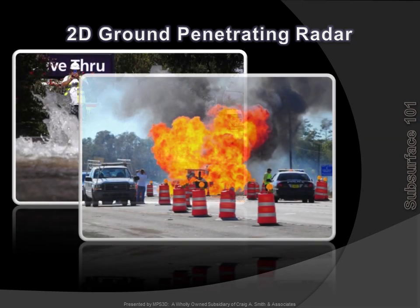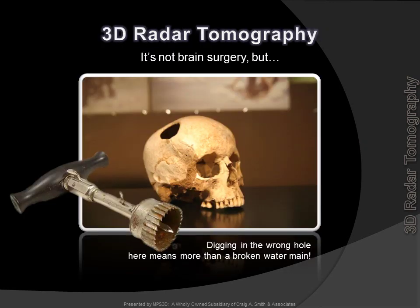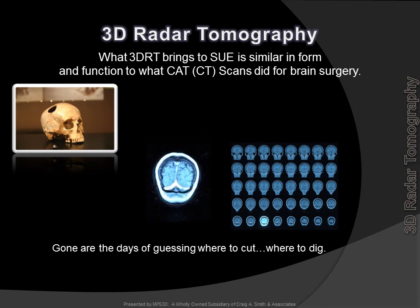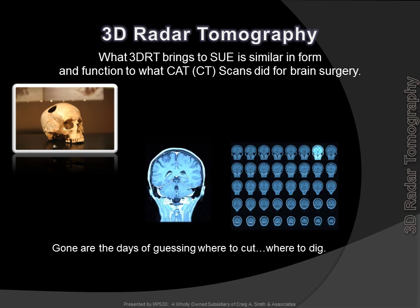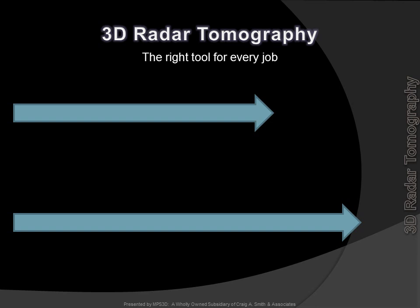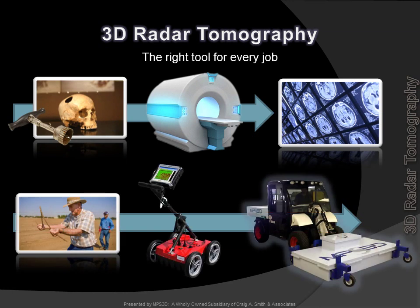The consequences of missed facilities can be disastrous. Enter 3D Radar Tomography — a precise 3D image of the underground. Digging underground may not be brain surgery, but similar to brain surgery, precision is the key to success. 3D Radar Tomography creates a virtual CAT scan of the underground. Knowing where to cut, or where to dig — or for that matter, where not to — is critical to success of the operation. The key to success is using the right tool for every job: for brain surgery, a CAT scan; for underground construction, 3D Radar Tomography.